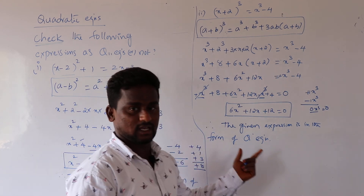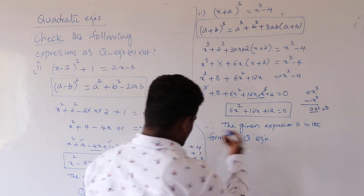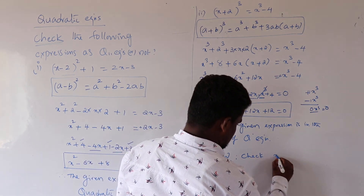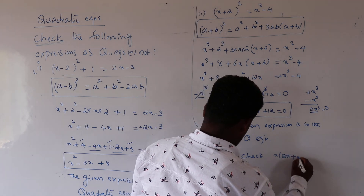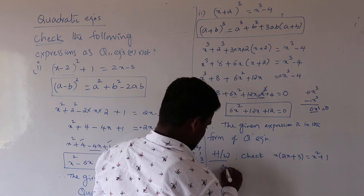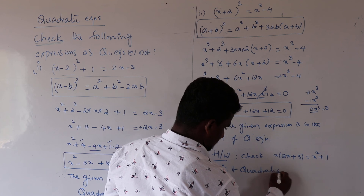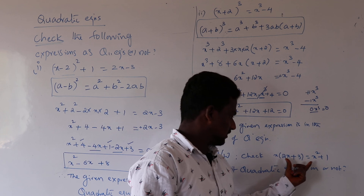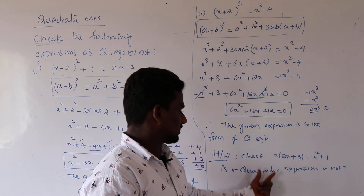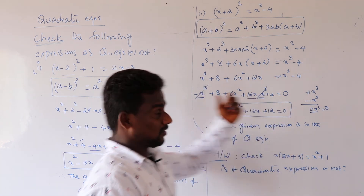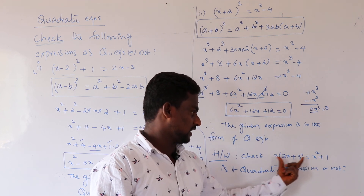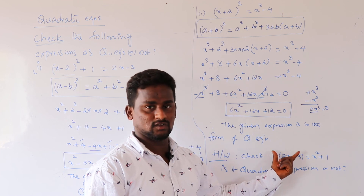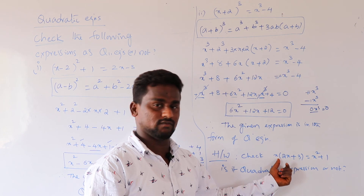So using the same method, we can check any given expression. Your homework is to check: x times (2x plus 3) equal to x square plus 1. Simplify it and conclude whether it is a quadratic expression or not. If you have any doubts, just comment on the YouTube channel. Thank you.